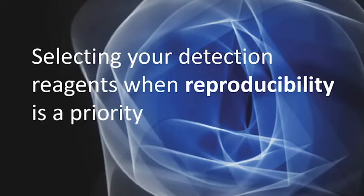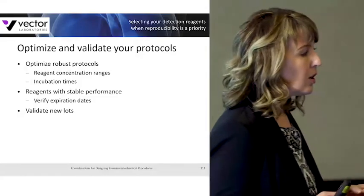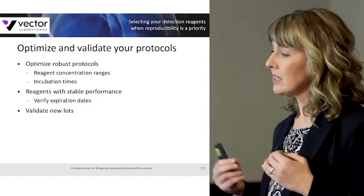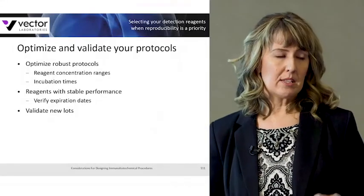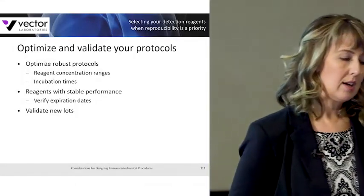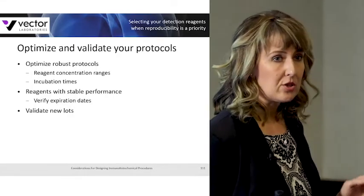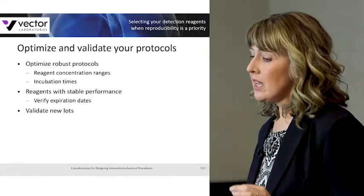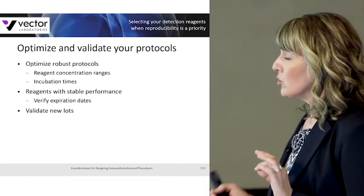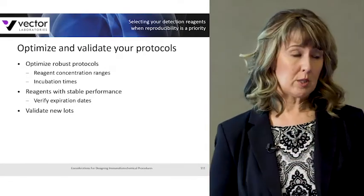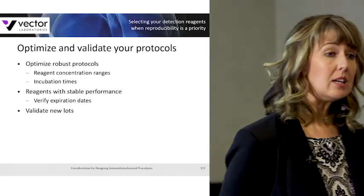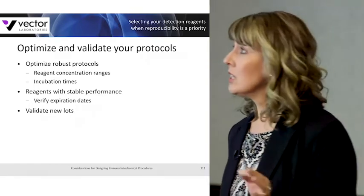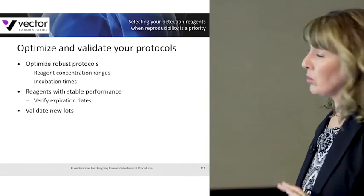Selecting reagents when reproducibility is a priority means choosing reagents that will deliver consistent and reliable results every time you run your assay. Design and optimize a robust protocol by optimizing reagent concentrations and incubation times, and ensure the reagents you choose have a stable performance profile over their entire lifetime. It's also very important to validate any new lots you purchase to achieve optimal results in your current protocol.